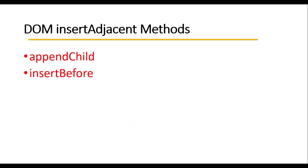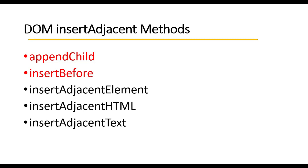In the previous video we learned about two methods: appendChild and insertBefore. By using appendChild we can append an element at the end of a div, and by using insertBefore we can specify the location of a specific element. After that we have three other methods: insertAdjacentElement, insertAdjacentHTML, and insertAdjacentText.